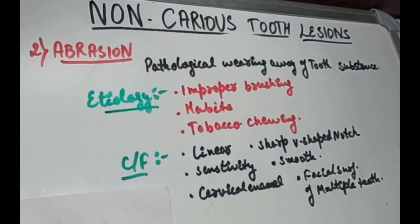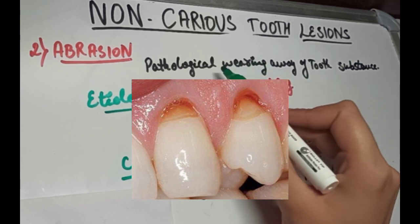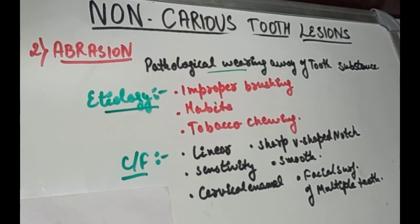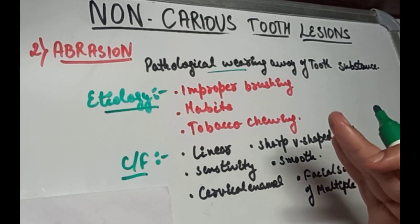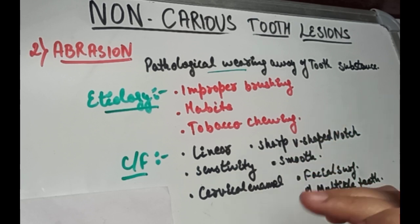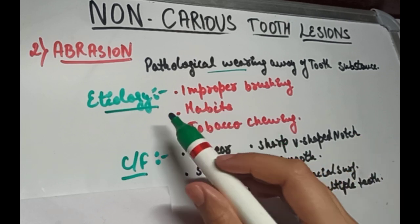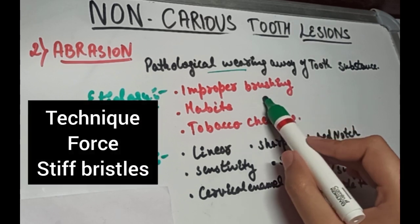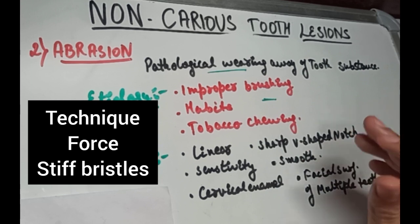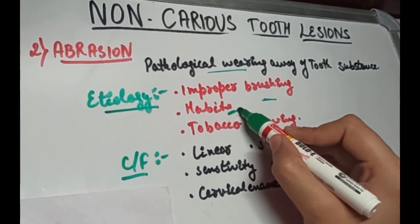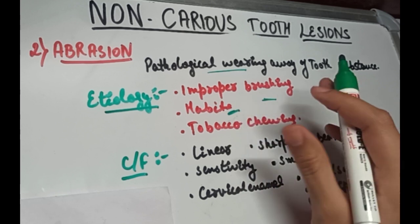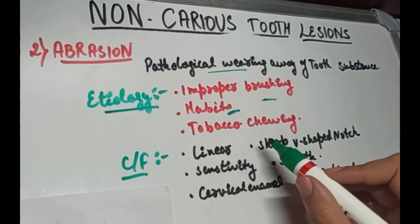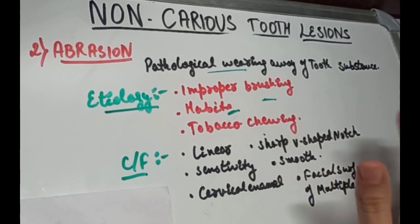Abrasion is an abnormal tooth surface loss — a pathological wearing away of tooth substance resulting from direct forces of friction between the teeth and external objects, or from frictional forces between contacting tooth components in the presence of an abrasive medium. Abrasion can result from improper brushing techniques, improper brushing force, or bristle stiffness. It can also result from habits like holding a pipe stem between the teeth, causing depression abrasion on the occlusal surfaces, or tobacco chewing, which causes generalized occlusal surface abrasion.